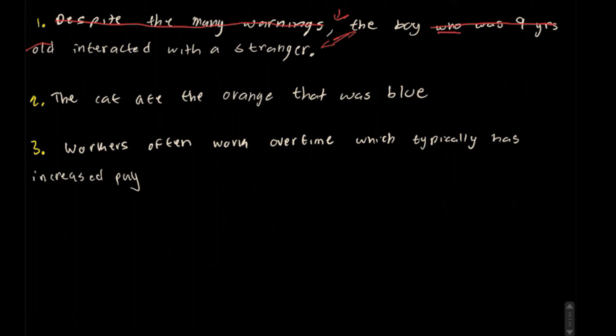Alright, the cat ate the orange that was blue. Okay, that's also very simple. There's only one relative pronoun here. So, we can just eliminate this portion of the sentence, and then we're done. The cat ate the orange. Because this, again, is simply describing the orange. It's relative to the orange.